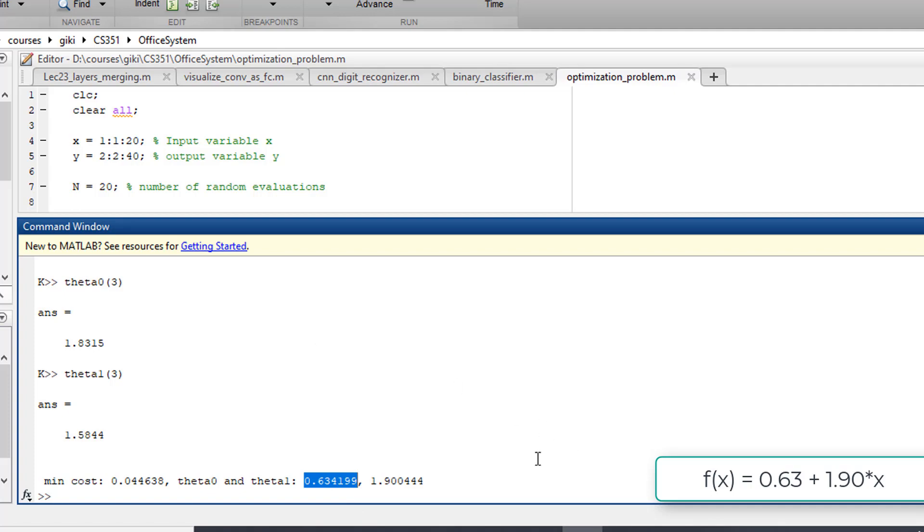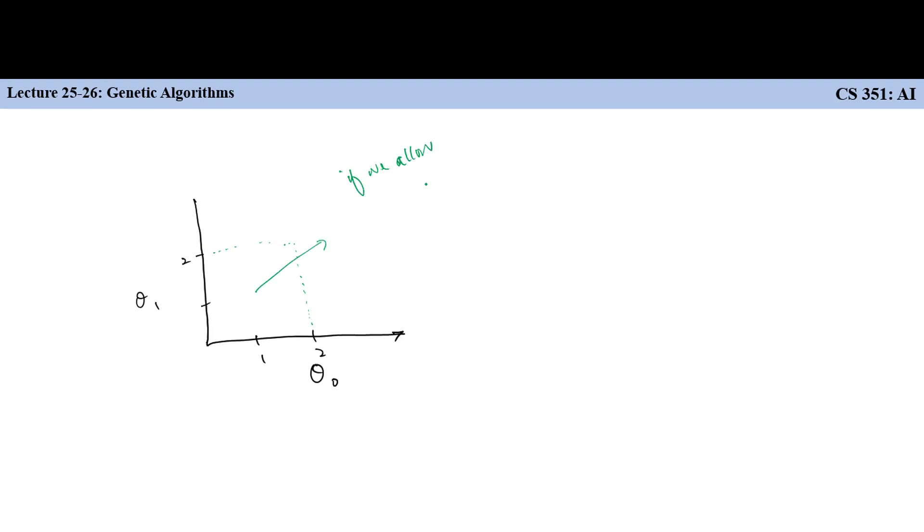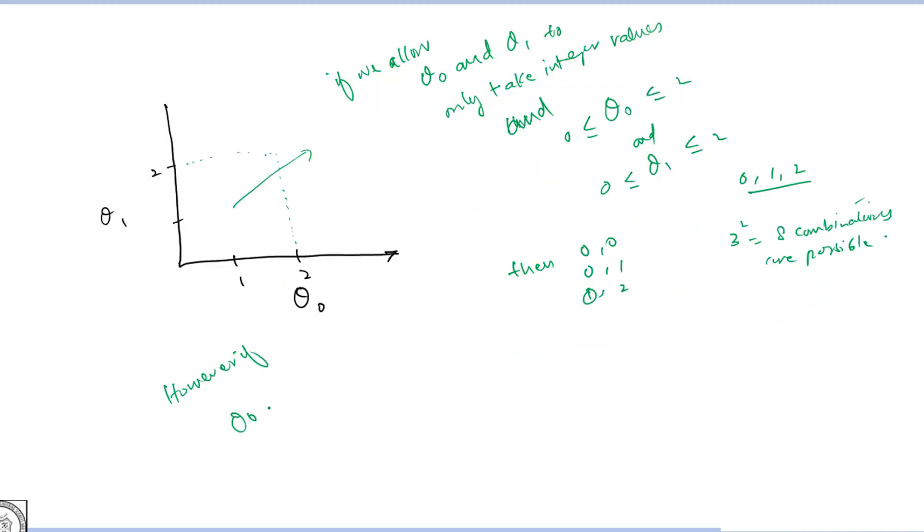If we draw theta 0 on the x axis and theta 1 on the y axis and according to our initial assumption both can vary in the range of 0 to 2, then both parameters can be initialized from this range. If they can only take integer values then the total number of possibilities are only 8. However for real numbers the number of possible initializations for theta 0 and theta 1 is infinite.